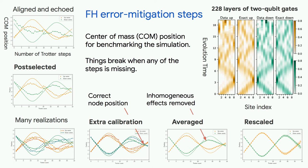The first error mitigation scheme we used is post-selection, which was also used in the Hartree-Fock experiment. And after using that, we realized that our qubits may be different. So we ran the same experiment in many different configurations of the qubits.